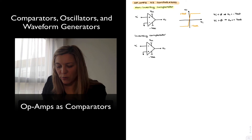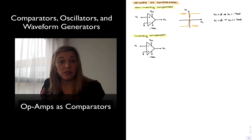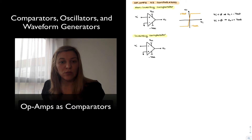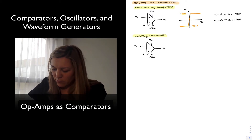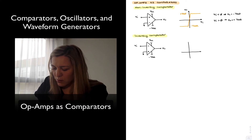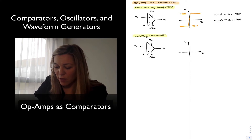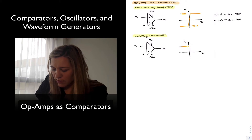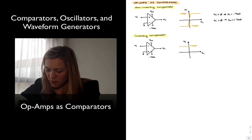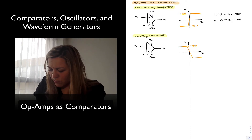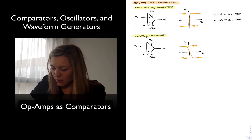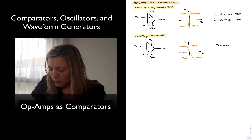That covers the non-inverting comparator. If we want to design an inverting comparator, we simply flip the inputs — apply the input signal to the inverting input terminal and connect the non-inverting input to ground. In that case, the output is just the opposite: for negative values of V_in, we have positive V_sat, and for positive values of V_in, we have negative V_sat. Mathematically, for V_in less than zero, V_out equals negative saturation voltage.